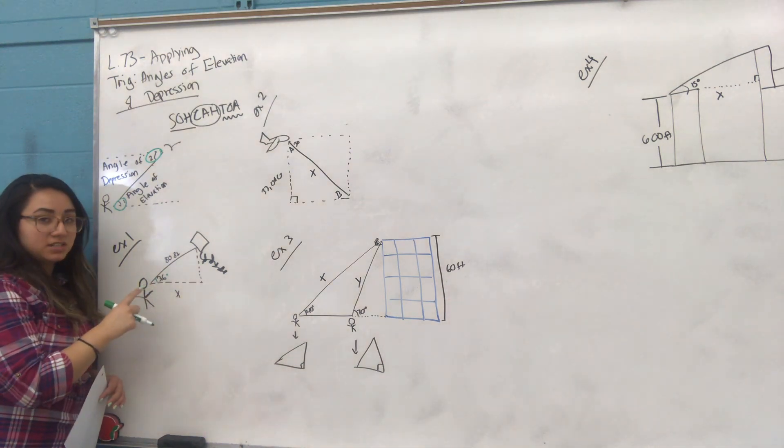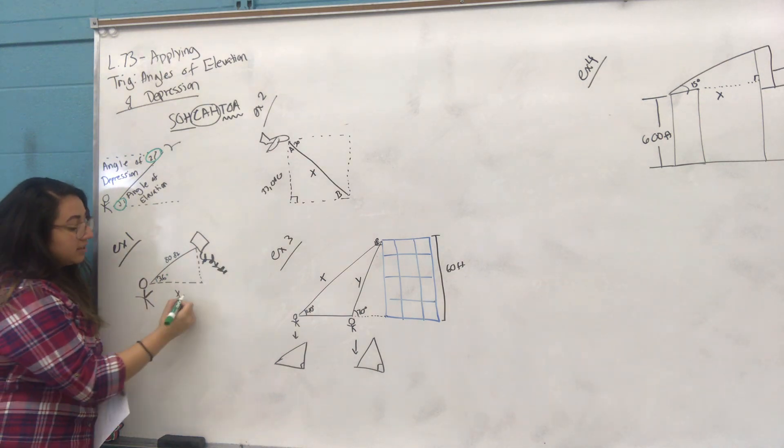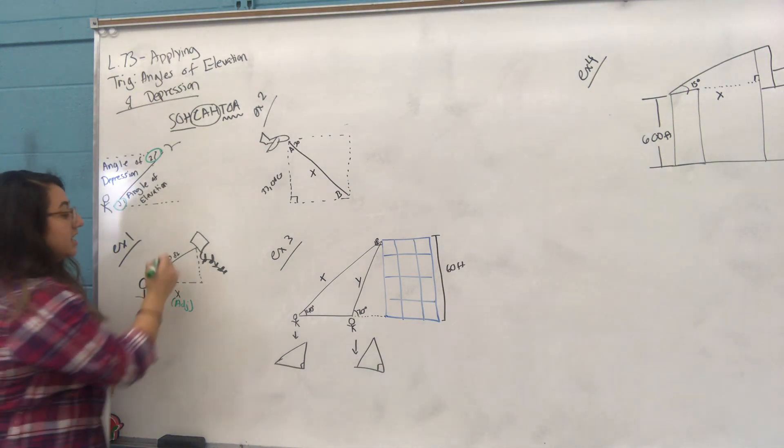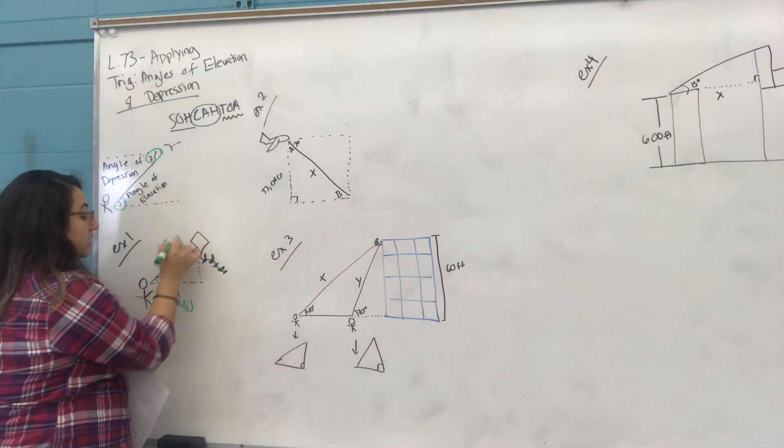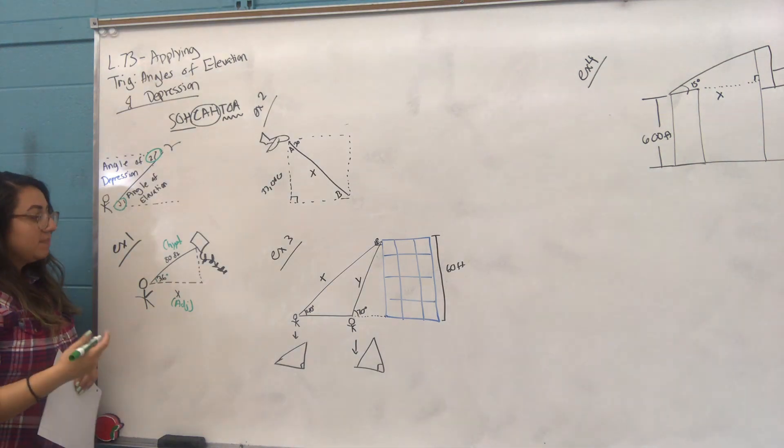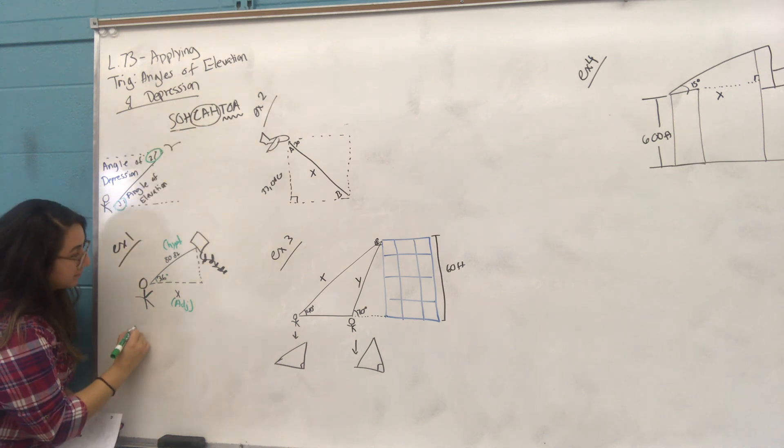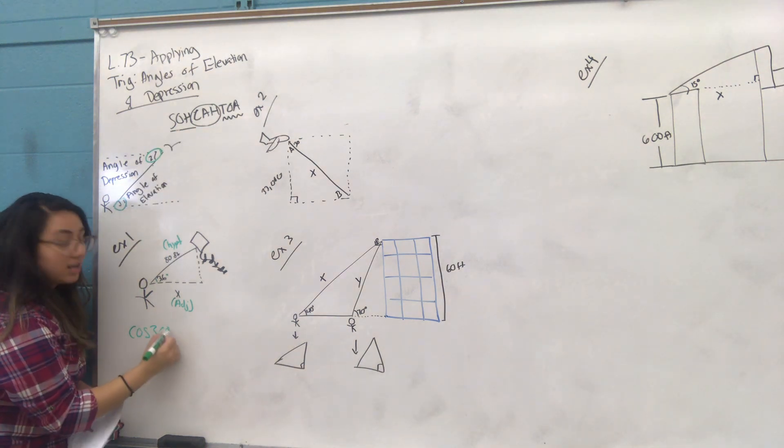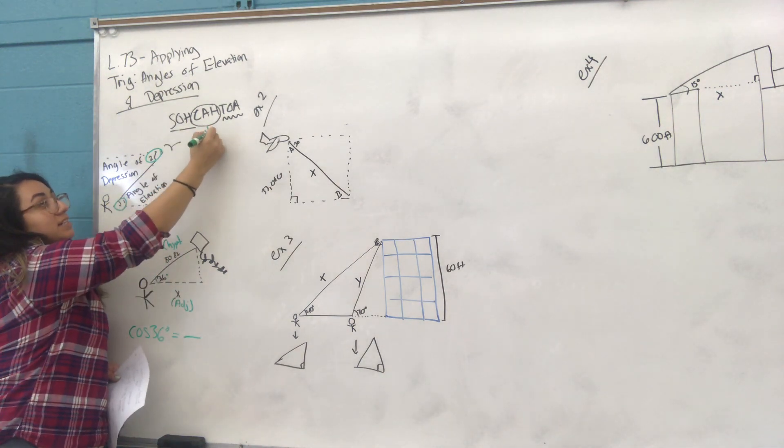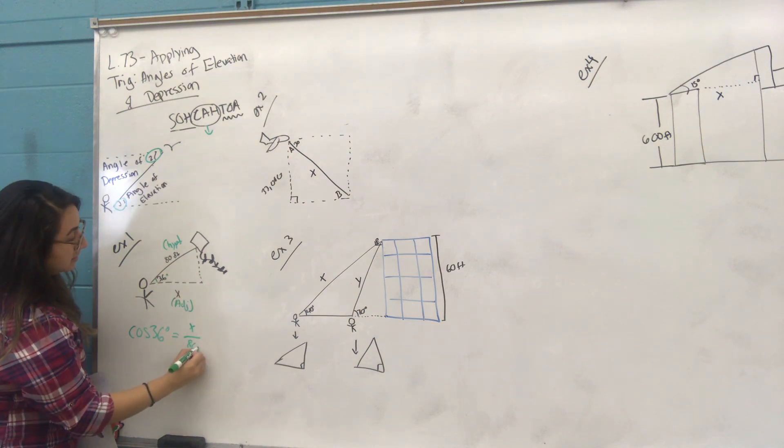So we have to see what the relationship is to each of them. For x, what is x to 36? Your three options are opposite, adjacent, and hypotenuse. Here, this is considered adjacent. 80 feet is considered the hypotenuse. So now we're looking for a trig function that deals with adjacent and hypotenuse. And if we look here, that is cosine. So cosine of the angle, which is 36, equals adjacent over hypotenuse. So adjacent is x, hypotenuse is 80.